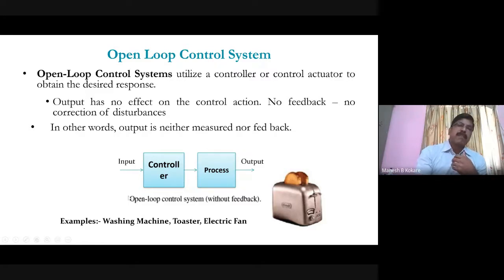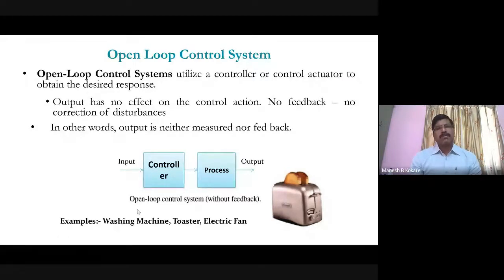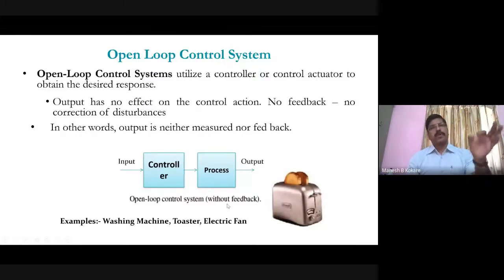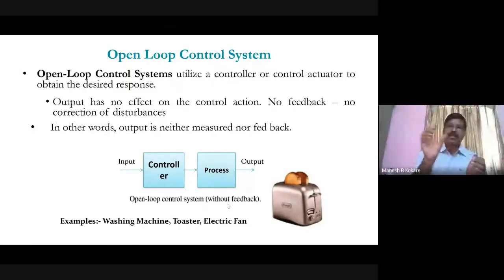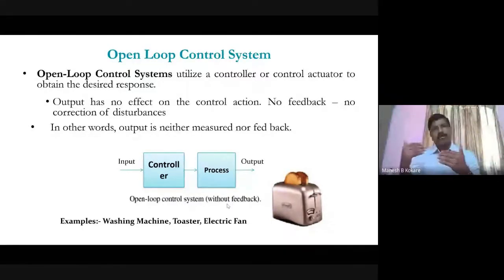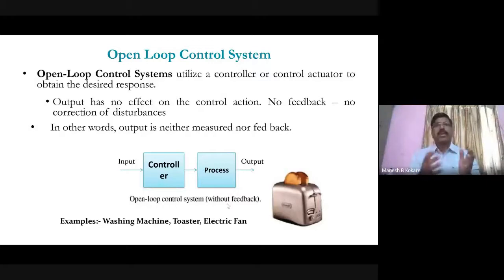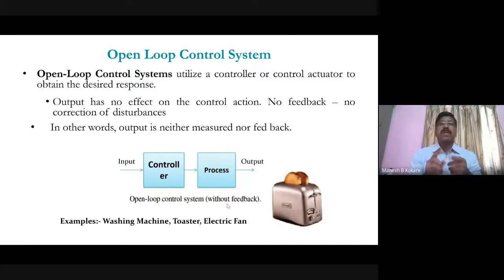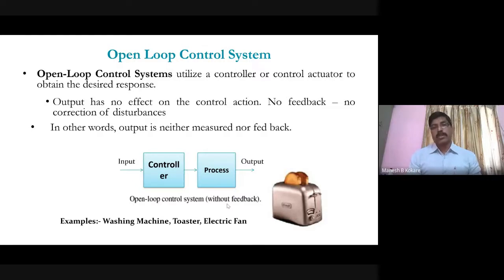A best example of an open-loop control system is a washing machine. We set the machine for a certain number of minutes — cycle one, cycle two, cycle three — for light, medium, or heavy load. But we don't actually check whether the clothes are clean or not. There is no feedback on the output; our expected output is clean clothes, but we are not measuring the cleanliness inside the machine.